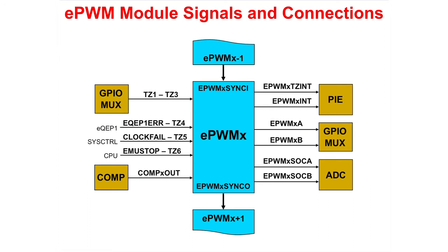An ePWM module can be synchronized with adjacent ePWM modules. The generated PWM waveforms are available as outputs on the GPIO pins. Additionally, the ePWM module can generate ADC start-of-conversion signals and generate interrupts to the PI block. External trip zone signals can trip the output and generate interrupts too. The output of the comparators are used as inputs to the digital compare submodule.